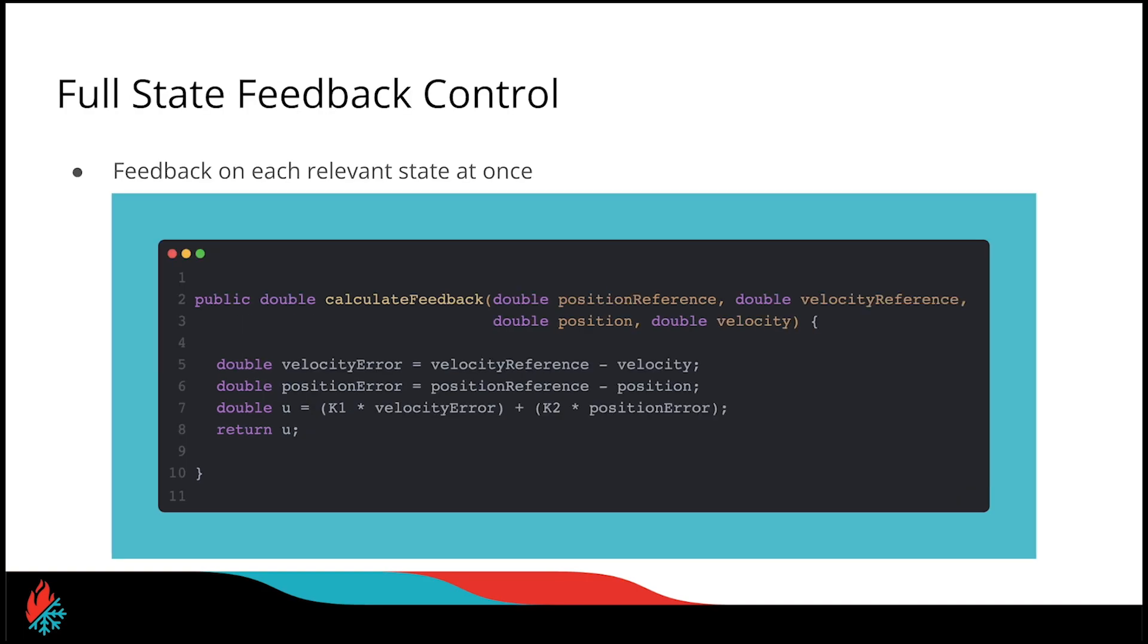In control theory, there's a concept called full state feedback control. Full state feedback is whenever we are performing feedback on multiple relevant states at once. In this example, our two relevant states are our position state and our velocity state. This method is basically just an extension of the previous one, where we are combining two feedback controllers, one for position, one for velocity. This is very similar to a proportional derivative controller, if you've used the PID control method before. But this allows us to put in a direct velocity state, instead of just using an estimated velocity to dampen our system.